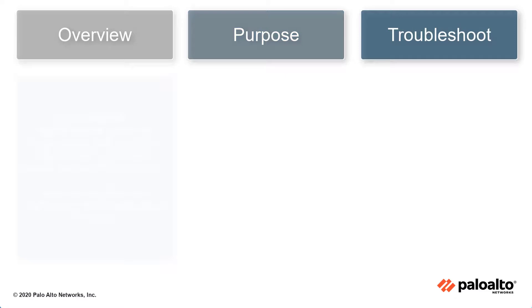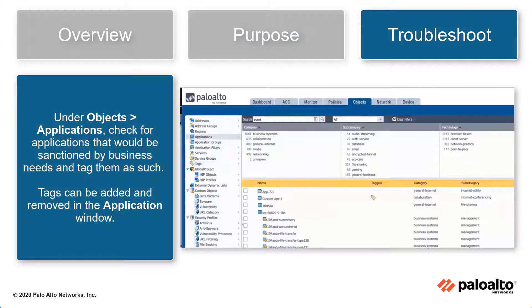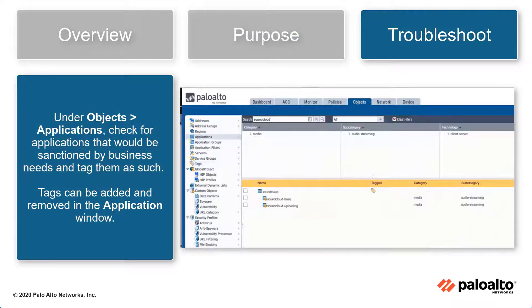Under Objects, Applications, check for applications that would be sanctioned by business needs and tag them as such. Tags can be added and removed in the application window.